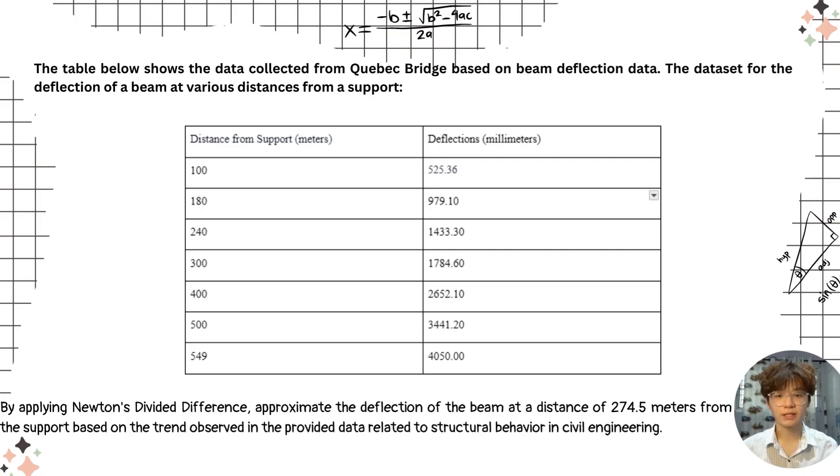The table below shows the data collected from Quebec bridge based on beam deflection data. The data set for the deflection of a beam at various distances from a support. The x-axis shows the distance from support and the y-axis shows the deflection. By applying Newton's divided difference, approximate the deflection of the beam at a distance of 274.5 meters from the support based on the trend observed in the provided data related to structural behavior in civil engineering.